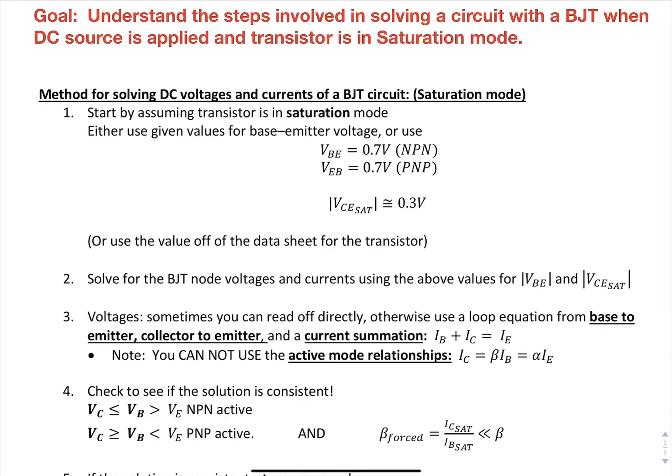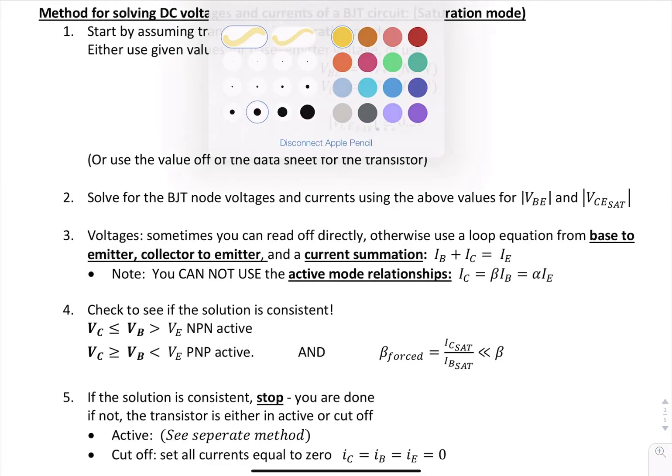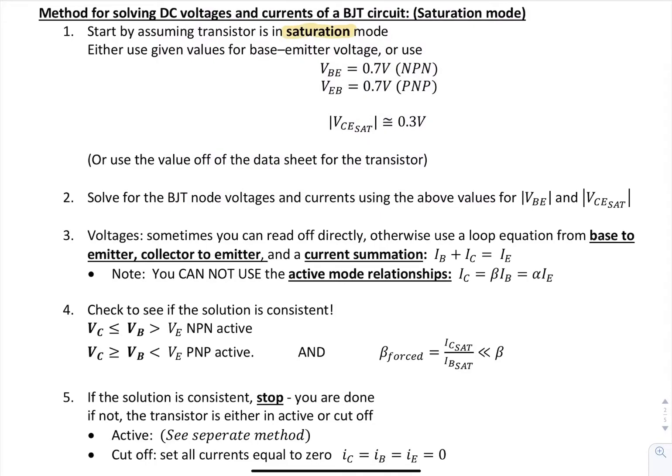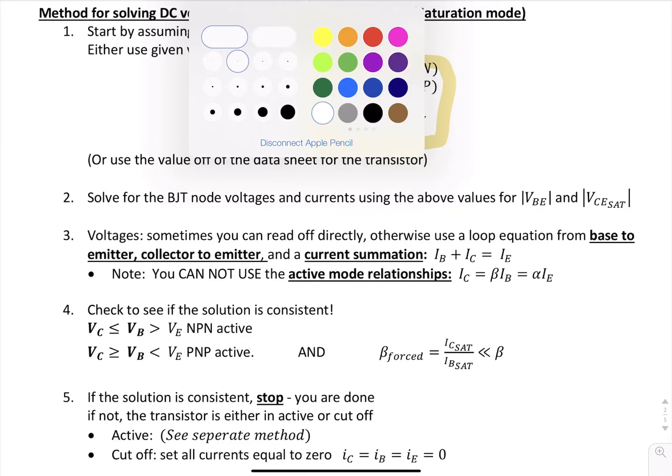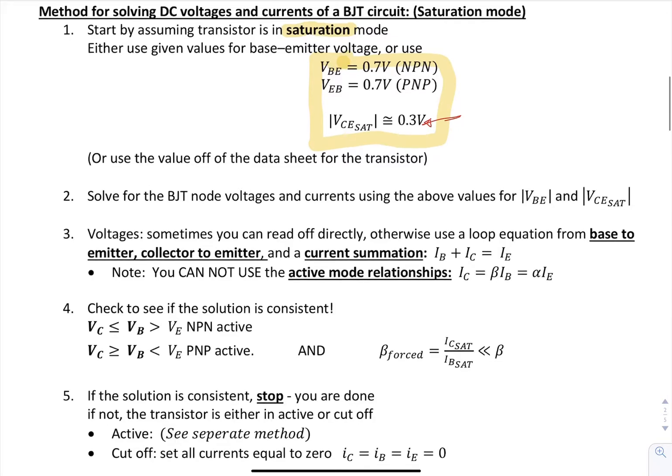The method for solving DC voltages and currents in a BJT circuit is similar to the active mode, except for this time we're going to use the saturation mode. So assume it's in saturation and then you're going to use these conditions for VBE. And if VCE is not given to you, then you want to assume that VCE is going to be 0.3 for an NPN and then VEC is going to be 0.3 for a PNP. You can also look that up if you know the transistor number, you can get it off of the data sheet for that transistor.